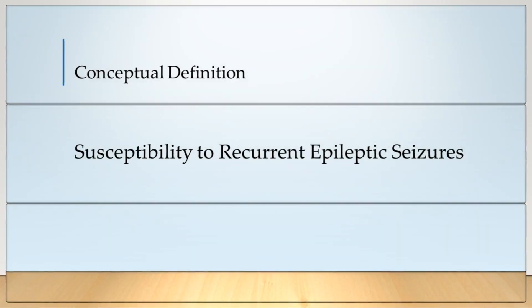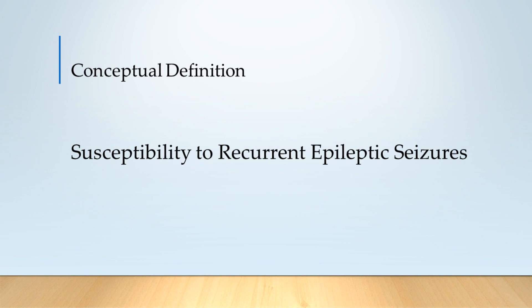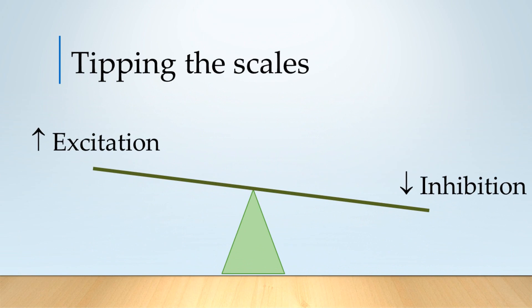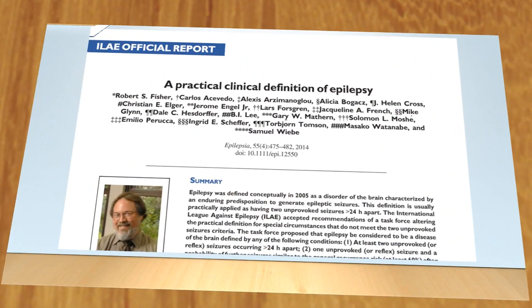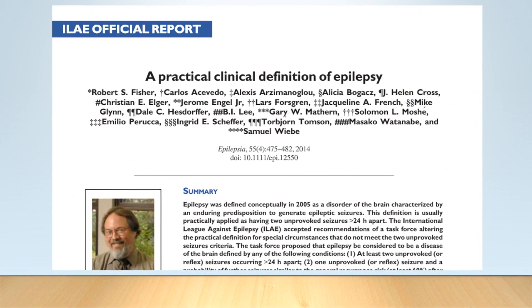If you had a look at my first video, you can click to it by utilising the iCard above. I provided a conceptual definition of epilepsy as a susceptibility to recurrent epileptic seizures, and I explained that a susceptibility meant that there is an imbalance between either the excitation going on inside the brain or a lack of the checks and balances of inhibition working effectively, predisposing people to having seizures. The ILAE report of 2014, which provided a practical clinical definition of epilepsy, has provided further information as to exactly what we mean by a recurrence risk.